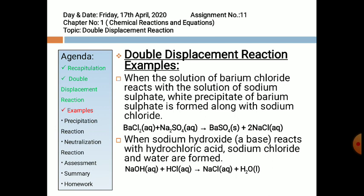Second example: when sodium hydroxide NaOH reacts with hydrochloric acid, sodium chloride and water are formed. NaOH is a base; in this, OH⁻ is the ion. When it reacts with HCl, chlorine Cl⁻ is the ion. Mutual exchange of OH⁻ and Cl⁻ takes place. The chemical reaction goes: NaOH + HCl → NaCl (sodium chloride) + H₂O (water).